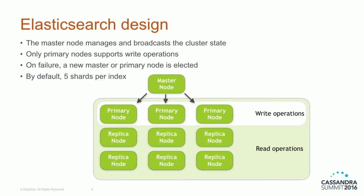Starting with Elasandra's design: in standard Elasticsearch, there is a master node that manages and broadcasts cluster state to all other nodes. The master node is involved each time the mapping is updated and when a node starts or stops. You also have primary nodes for reads and writes, and replica nodes that you can increase to boost search throughput. As a Cassandra fan, you're probably wondering what happens if you lose the master node, if you have a network partition, or how to scale primary nodes to increase write throughput. We will see how Elasandra's design solves this.